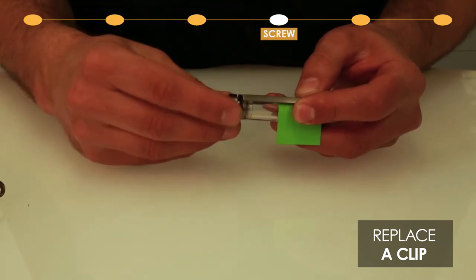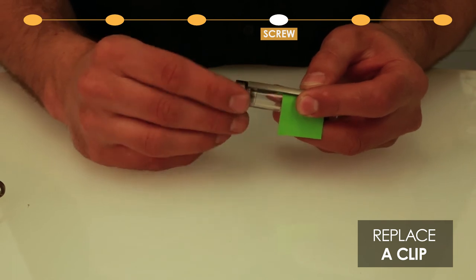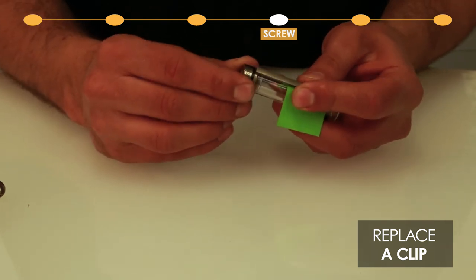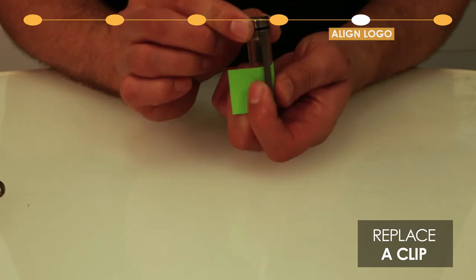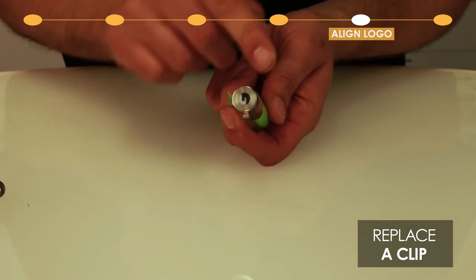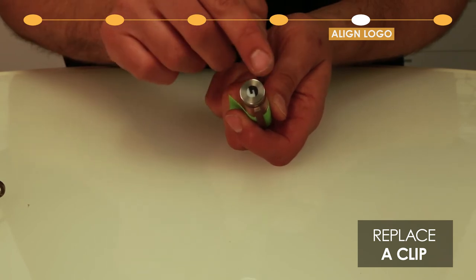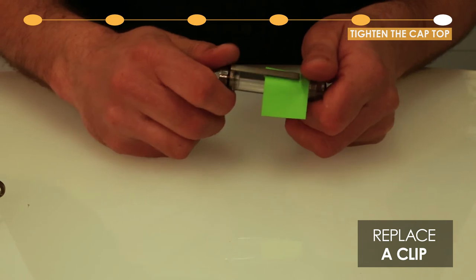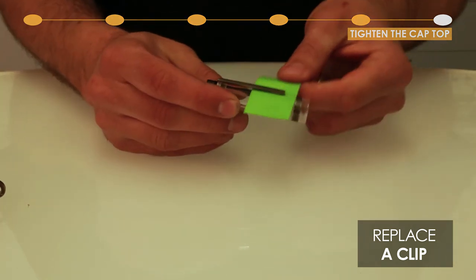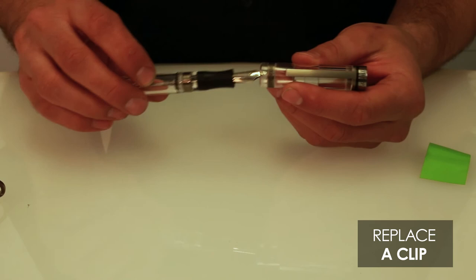Now you can screw the cap top back on by turning clockwise and always align the logo with the clip. Make sure the black of the logo is at the right side of the clip. And now tighten it and you're done.